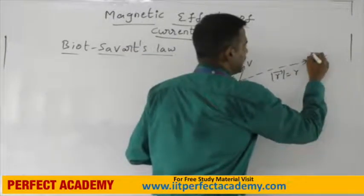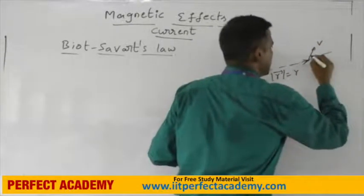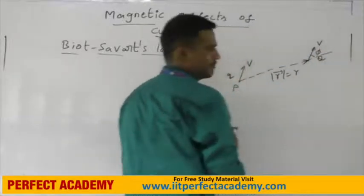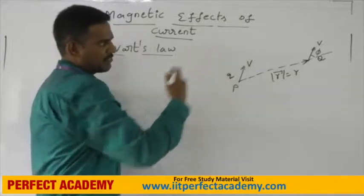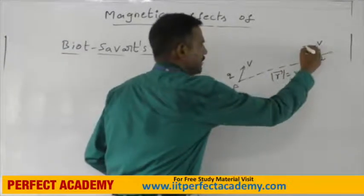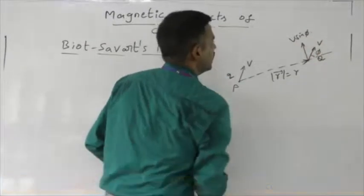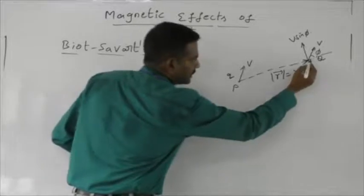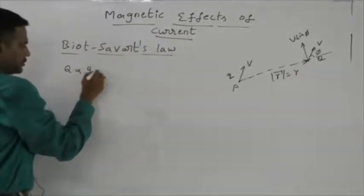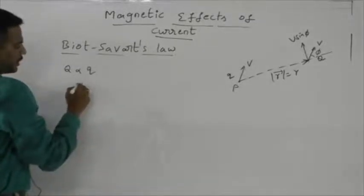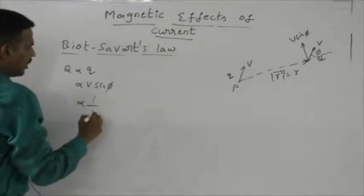The velocity direction is as shown, and here I have drawn one parallel vector. Let the angle between these two be φ. This velocity can be resolved into two components: one is V cos φ and another one is V sin φ. According to Biot-Savart Law, the magnetic field intensity at point Q is directly proportional to the charge Q, directly proportional to V sin φ, and inversely proportional to R square.